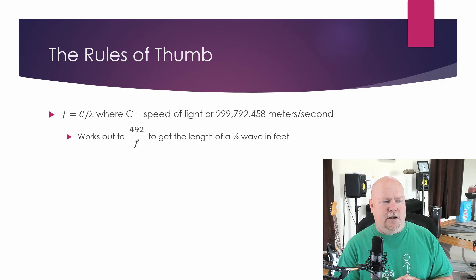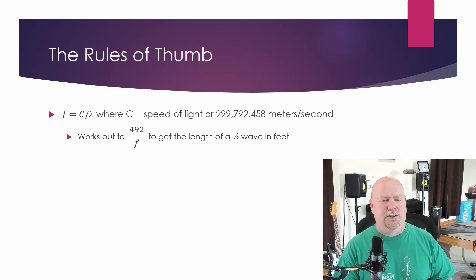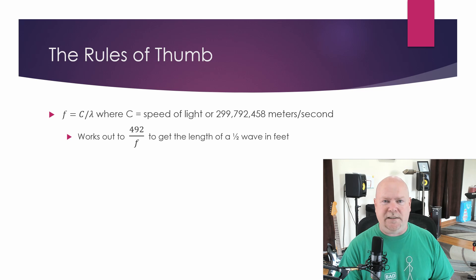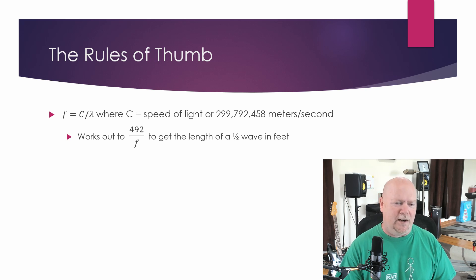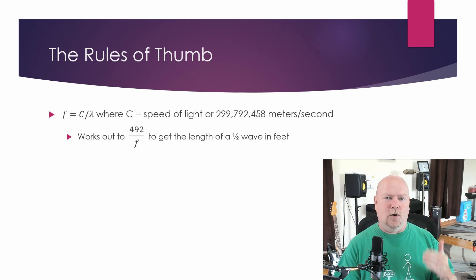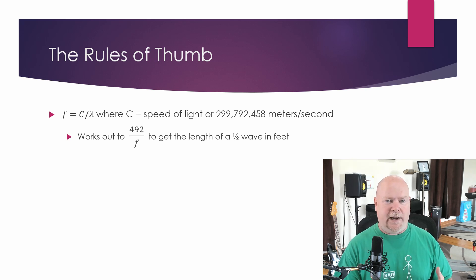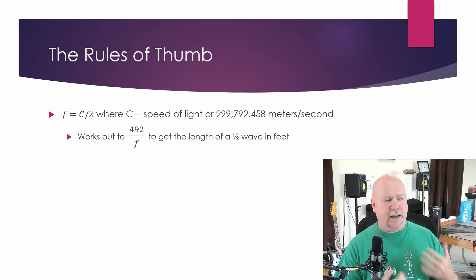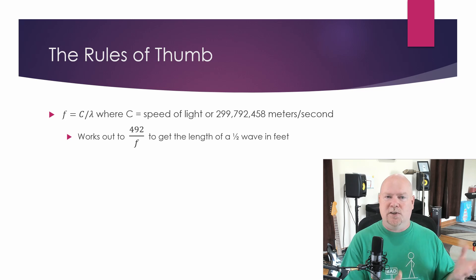Unfortunately, they mostly come from hams in the U.S., so you're all going to have to suffer through feet for this one. But it doesn't matter — the theory comes out the same. 492 over F gets you a half wave in feet if you just use the speed of light.